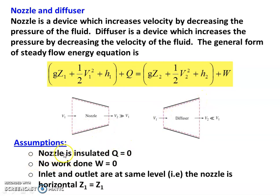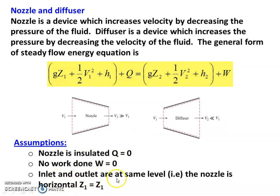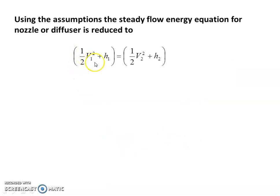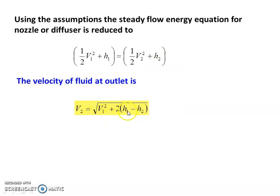We make the following assumptions for the nozzle. First assumption: the nozzle is insulated, meaning it is an adiabatic nozzle, so heat transfer Q = 0. Second: there is no work done on or by the fluid, only a change in properties such as velocity and pressure, so W = 0. Third: the inlet and outlet are at the same level — the nozzle is horizontal — so Z1 = Z2. Applying these three conditions (Q = 0, W = 0, Z1 = Z2), those terms are eliminated and we get: (1/2)V1² + H1 = (1/2)V2² + H2. Rearranging, the velocity of the fluid at the outlet is: V2 = √(V1² + 2(H1 − H2)).